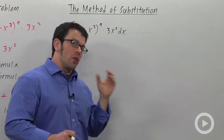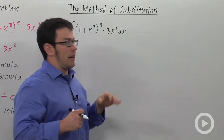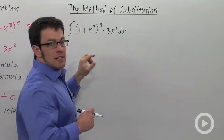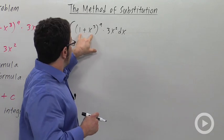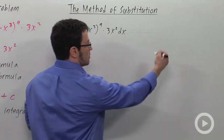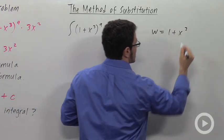Whenever you use the method of substitution, you usually have a composite function of some kind involved in your integral. You want to look at the inside part of that composite function. In this case, that's the 1 plus x cubed. And you're going to substitute for that. This is essentially a change of variables trick. I'm going to let w equal 1 plus x cubed.